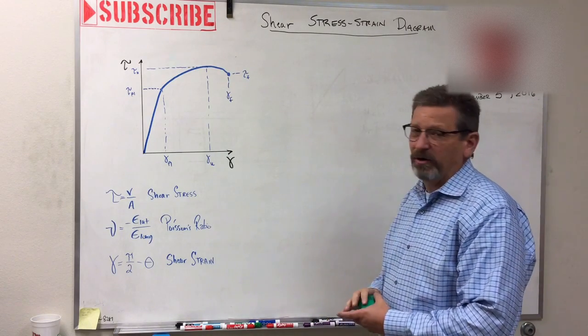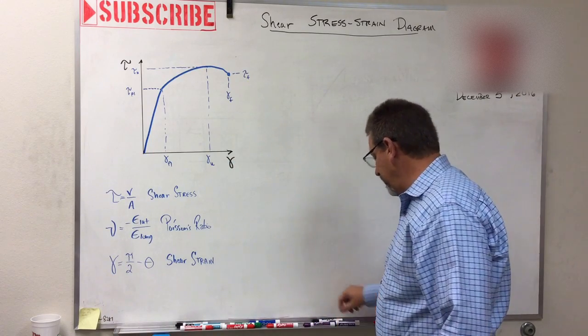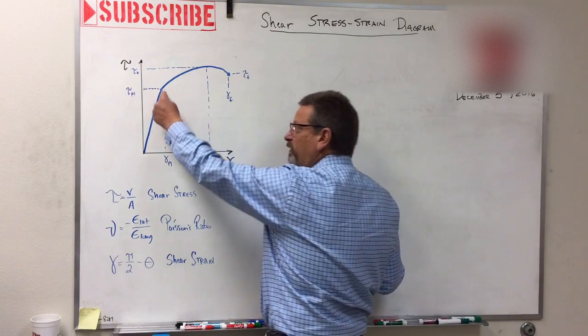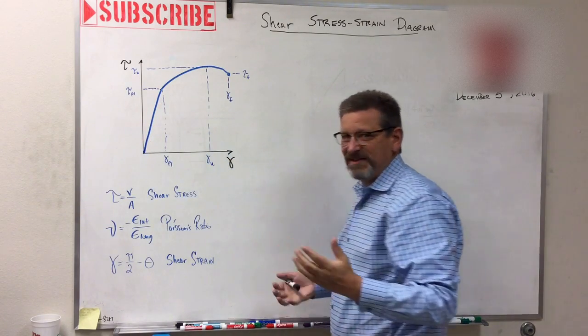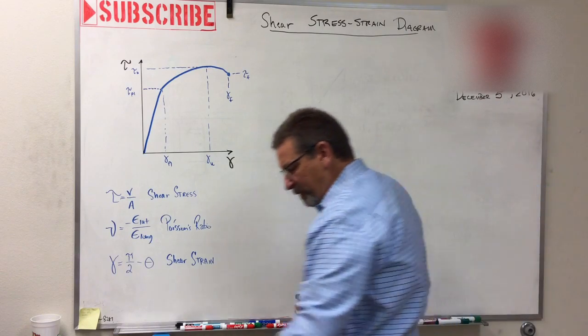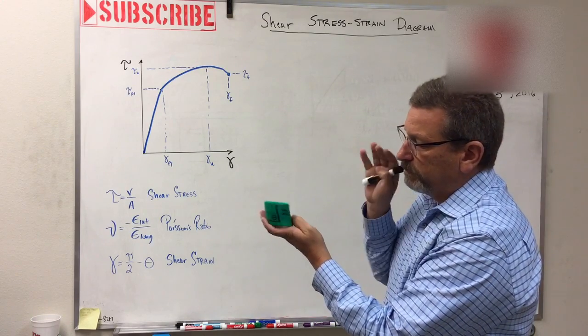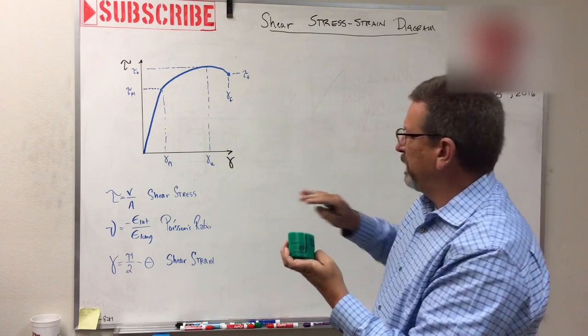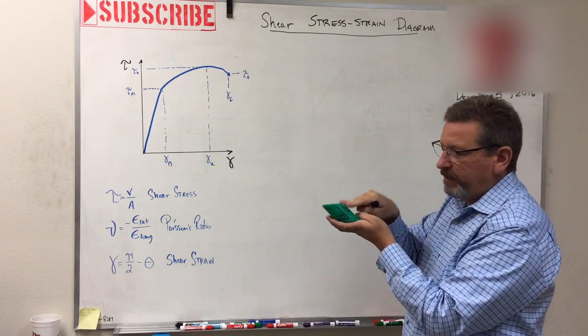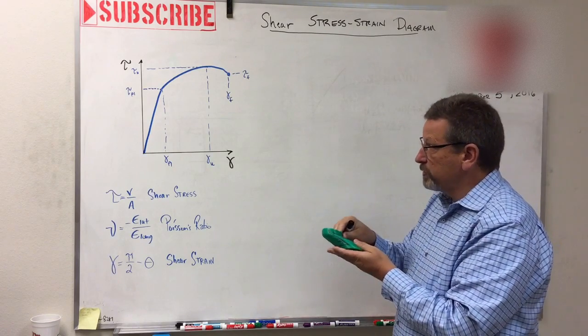So let's think about this. Now notice this graph still has a straight section there. What does that mean? Well, just like in the other graph, that means if I put a shear stress on this, when I let go of it, it goes back to where it was. So this is the elastic region for that shearing action. If I shear it, it goes back when I let the force off of it.